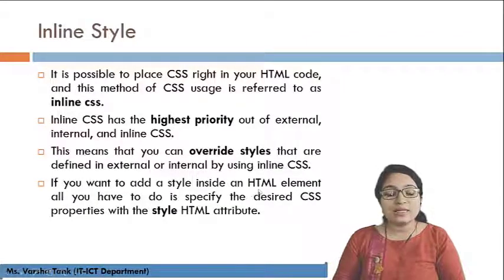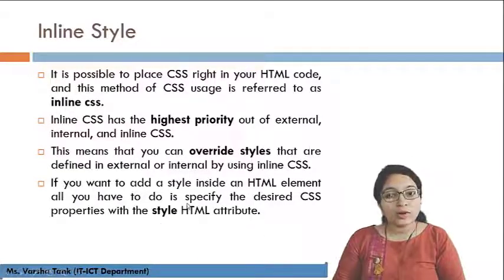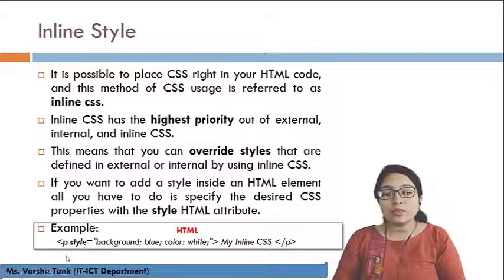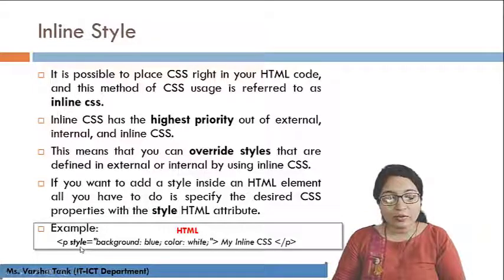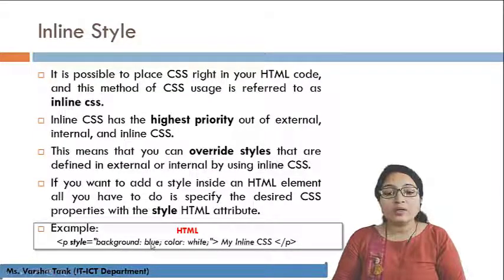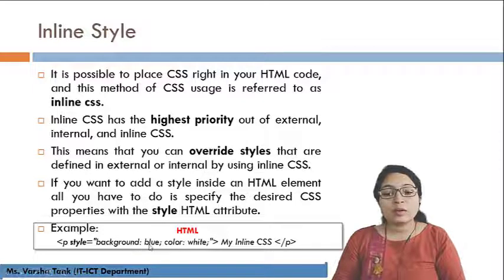If you want to add a style inside an HTML element, all you have to do is specify the desired CSS properties with the style HTML attribute. For example, assigning an inline style sheet to a paragraph element — in the p tag you define the style attribute with values like background blue and color white. This background color blue and font color white will be applied to that paragraph.